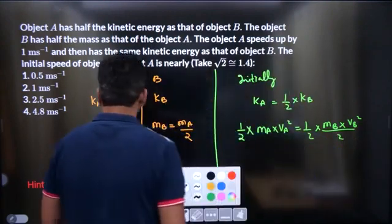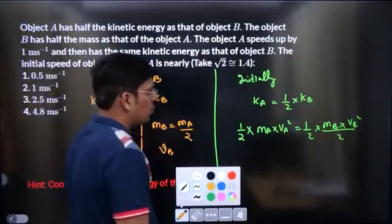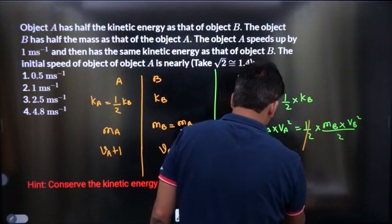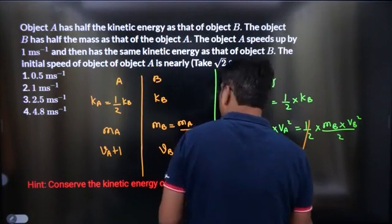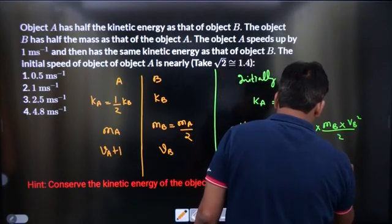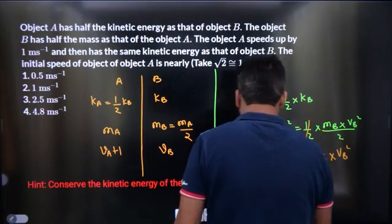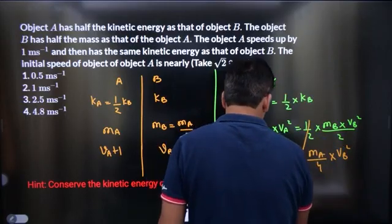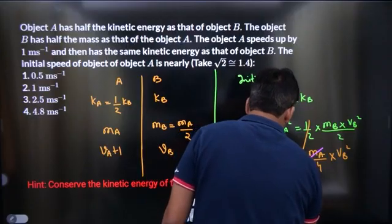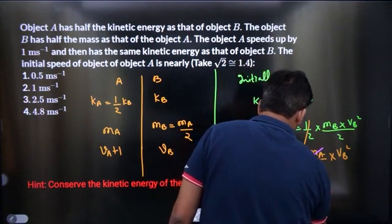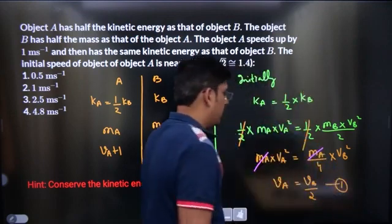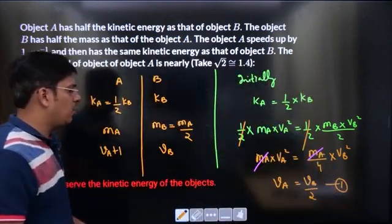Now as per the question MB is MA by 2. This half is gone. VA would be VB divided by 2. Let this be equation 1, VA equals VB divided by 2.